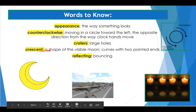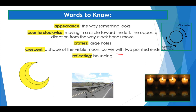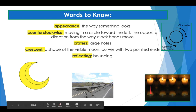Our next word is 'crescent' — a shape of a visible moon that curves with two pointed ends. An example: my banana was shaped like a crescent. Our last word is 'reflecting,' which also means bouncing. An example: I thought everything looked magical with candlelight reflecting off the walls of the room. Do you see how the light of the candle reflects or bounces off the surface?